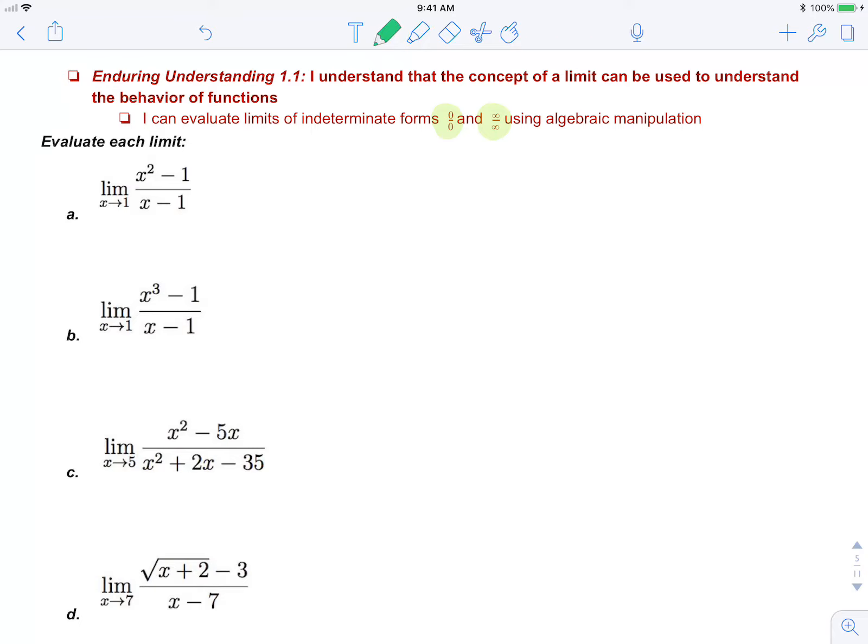So for example, in Part A, if I plug in 1, I get 0 over 0, which is an indeterminate form. So that means I need to do some algebraic manipulation to this limit before I can evaluate it.